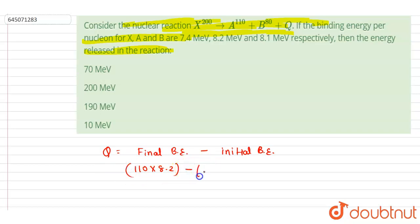Initial binding energy: there are 200 nucleons in X, so this is for the product final one, initial 200 nucleons, binding energy per nucleon is 7.4.